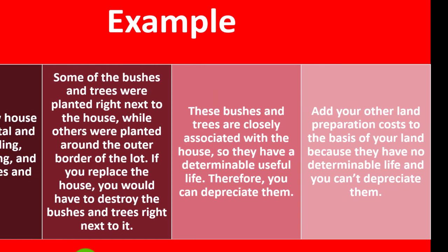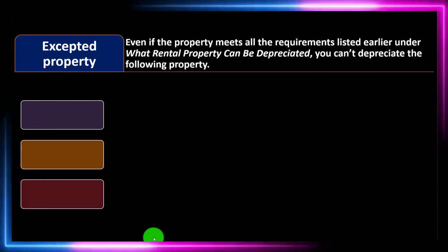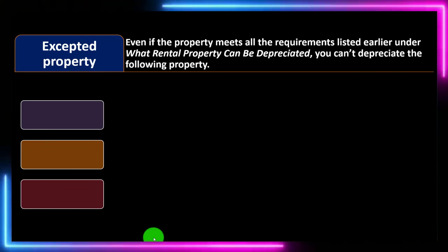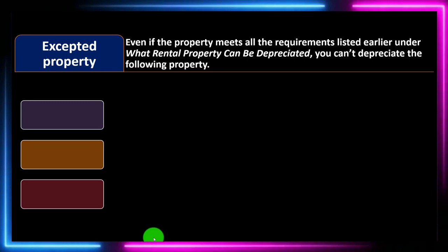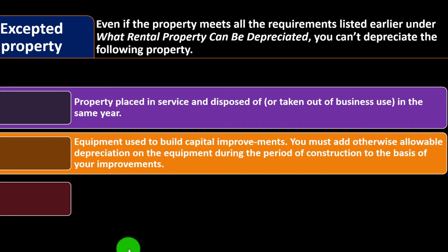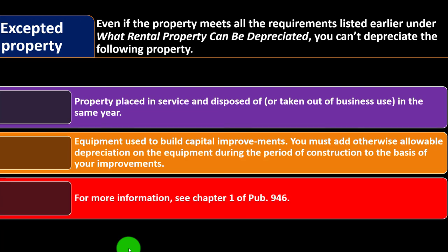Other land preparation costs should be added to the basis of your land because they have no determinable life and can't be depreciated. Even if property meets all the requirements for depreciation, you can't depreciate the following: property placed in service and disposed of or taken out of business use in the same year; and equipment used to build capital improvements — you must add otherwise allowable depreciation on the equipment during the period of construction to the basis of your improvements.